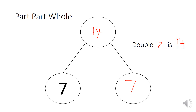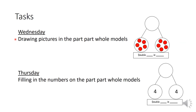If you're still not sure, you could draw your squares, or you could also use something in your home to help you — those concrete manipulatives. Your first task is drawing pictures in the part-part-whole model. You're given the two parts and need to put the total at the top and complete the sentence. Then on Thursday you'll do a similar task but filling in numbers on the part-part-whole models, doubling number four, putting the total at the top, and completing the sentence.